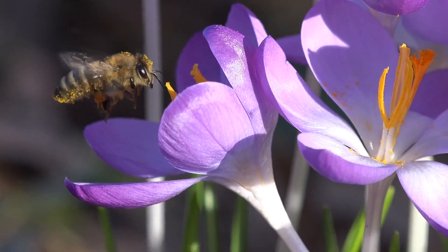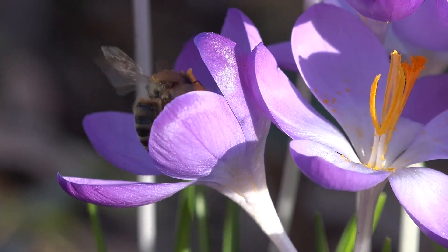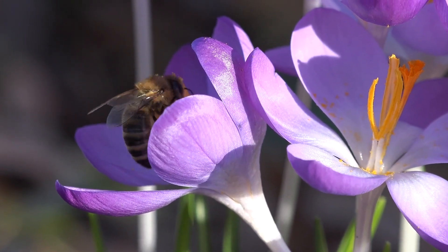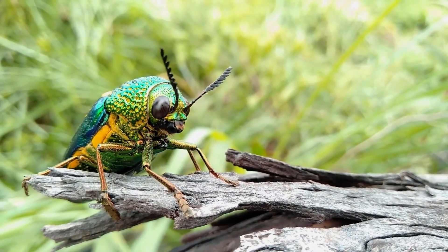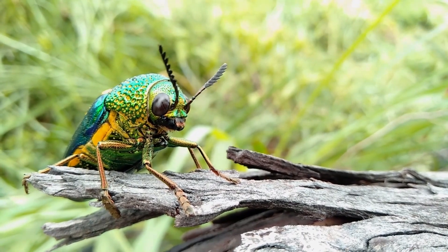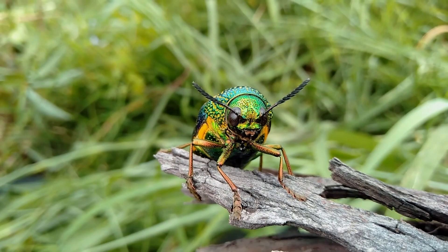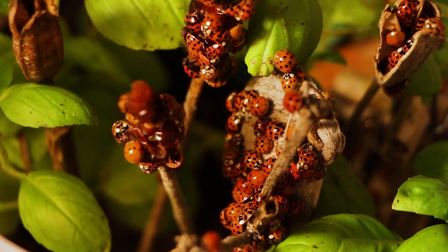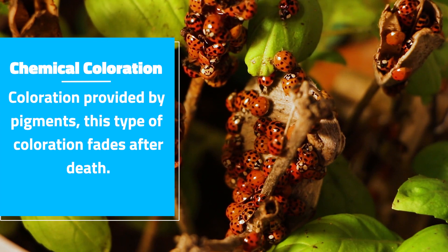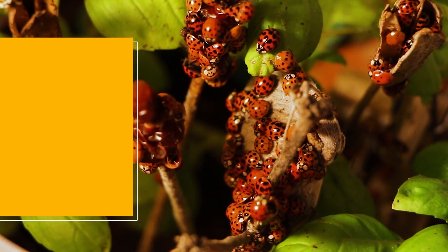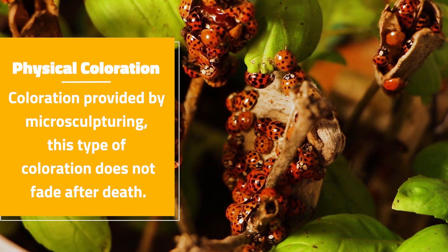Sensation on the cuticle is provided by sensory hairs, and respiration is provided by openings called spiracles, though we will go more in depth on insect sensory biology in a future video. Coloration is important, providing functionality in mating, defense, and camouflage. Coloration in insects can result from two different mechanisms: chemical coloration, derived from pigmentation in the exocuticle and endocuticle, and physical coloration, provided by microstructures on the epicuticle, which can cause iridescence.